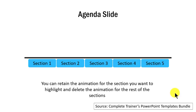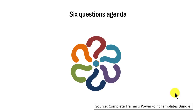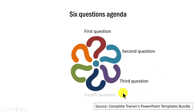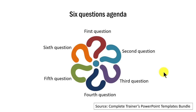Let us take the first example. Instead of organizing your program as multiple sections, you can organize it as answers to multiple questions. For example, in this case, we have got a six questions agenda, and you can write each of the questions here. When you organize your training session like this, it is far more interesting and engaging because the audience is naturally curious to know answers to questions.